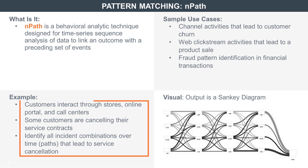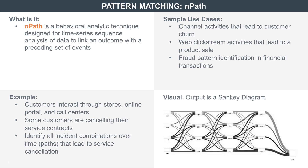For example, a teleco business would want to understand how customers stop using their services. They can collect all customer transactional data over time across all channels — for example, the call center, the physical store, and online — and see how the customer interacted through these channels before they decided to leave. NPath is a technique that enables this path analysis.